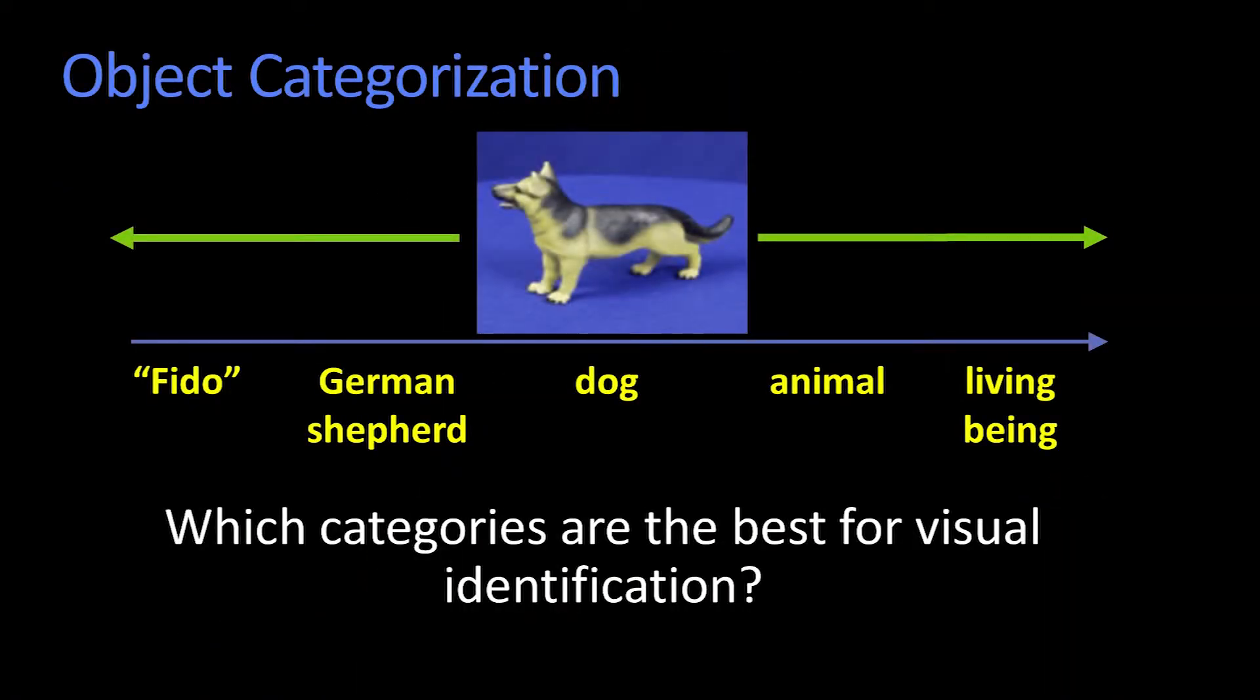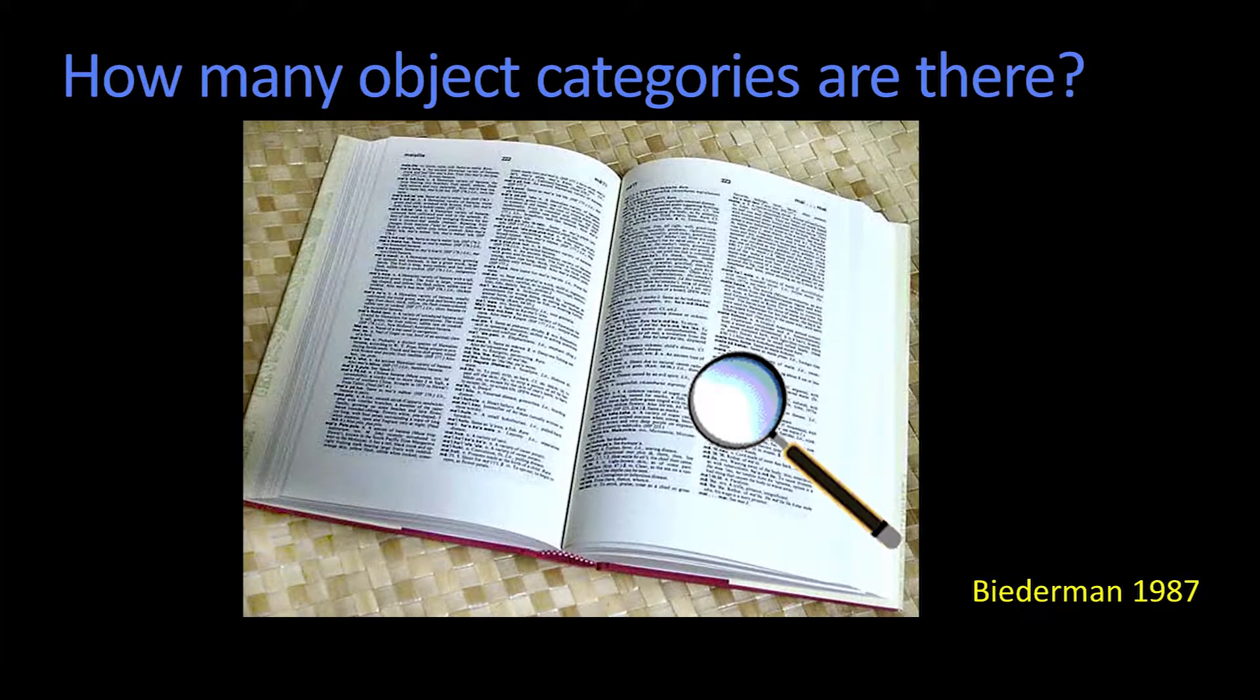So let's assume for a moment that we're going to have some set of visual categories. A question you might ask is, about how many of them are there? It's kind of a weird question to ask, you know, how many types of things are there. But we've got a finite amount of gelatinous stuff between our ears, and there's this question of how many different labels do you deal with?